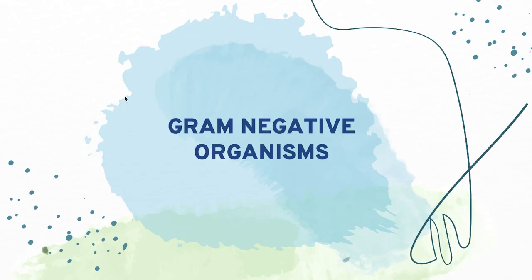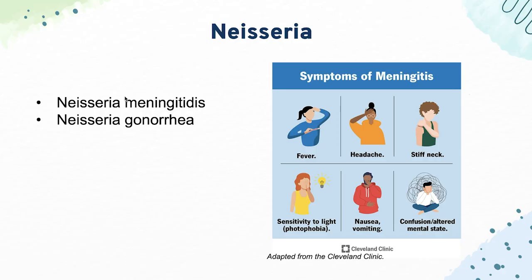Up next, we have our gram-negative organisms. Our first gram-negative organisms of interest are the Neisseria species. The first one is Neisseria meningitidis, which typically causes meningitis — patients will present with fever and neck rigidity and will be very acutely ill. Next, we have Neisseria gonorrhoeae, which causes urethritis, cervicitis, and pelvic inflammatory disorder, often identified by a creamy purulent discharge.